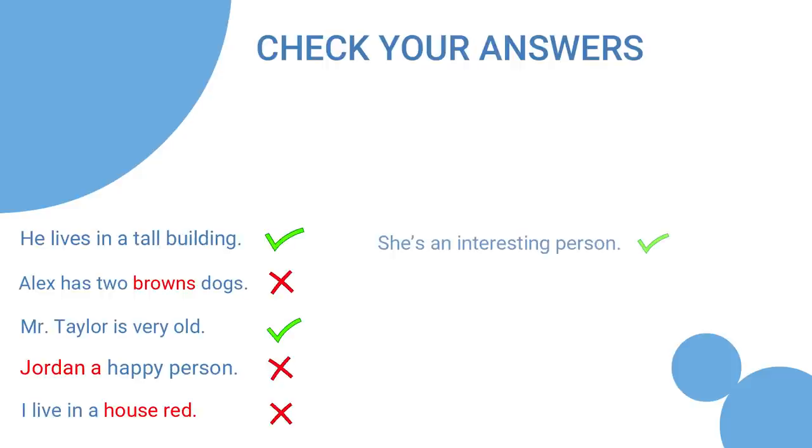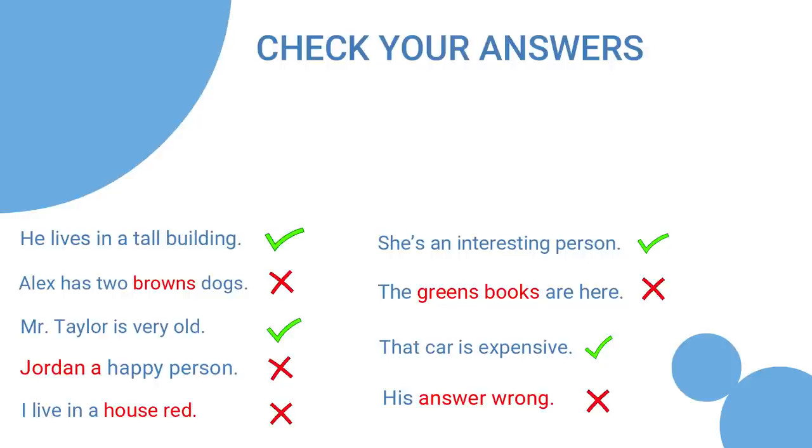Six, OK. Seven, not OK. The green books are here. Eight, OK. Nine, not OK. His answer is wrong.